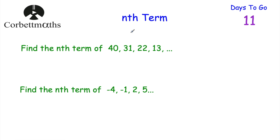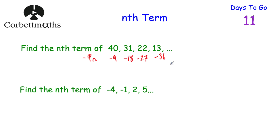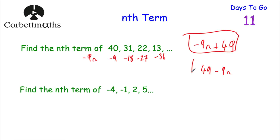Let's look at more sequences. We've got 40, 31, 22, 13, and so on. We're going down 9 each time, so let's write down minus 9n: minus 9, minus 18, minus 27, minus 36. To get from minus 9 to 40 we add 49, and the same applies for each term. So the nth term will be minus 9n plus 49 — or equivalently 49 minus 9n, depending which way you want to write it.